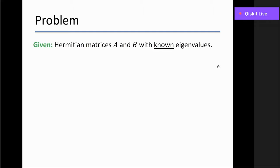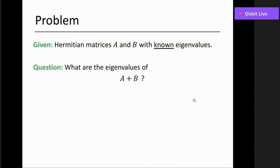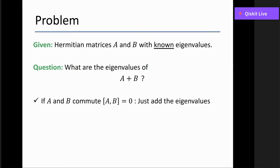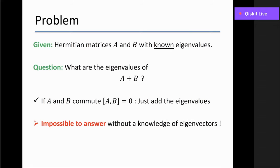Suppose you have two Hermitian matrices A and B with known eigenvalues. You ask: what are the eigenvalues of A plus B? A first-year linear algebra answer would be that the eigenvalues just add — but that is not the case in general. That would only be true if they commuted. In general they may not commute, so it's impossible to answer without knowledge of the eigenvectors what the eigenvalues of the sum will be.